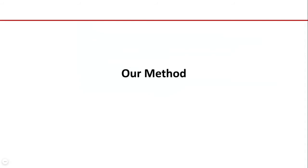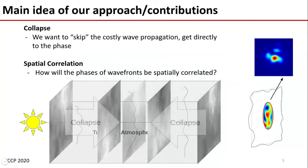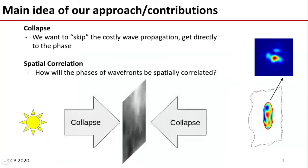Now onto our method. For our approach, we like to collapse the phase screens using the thin screen model and get directed to the phase in order to avoid the Fourier transforms. Doing away with the phase screens, however, leaves us with a bit of difficulty in evaluating their spatial correlation.